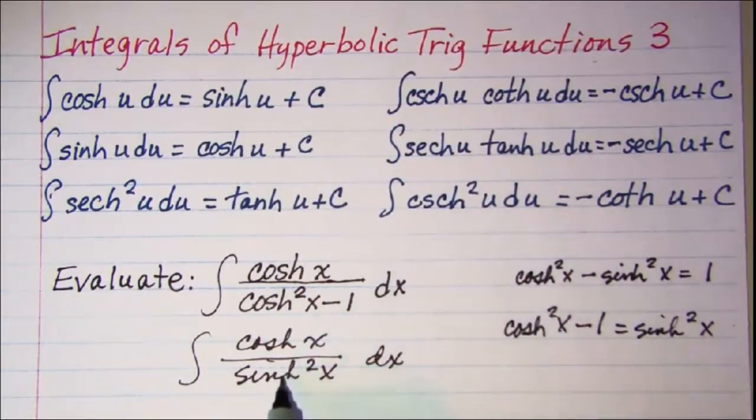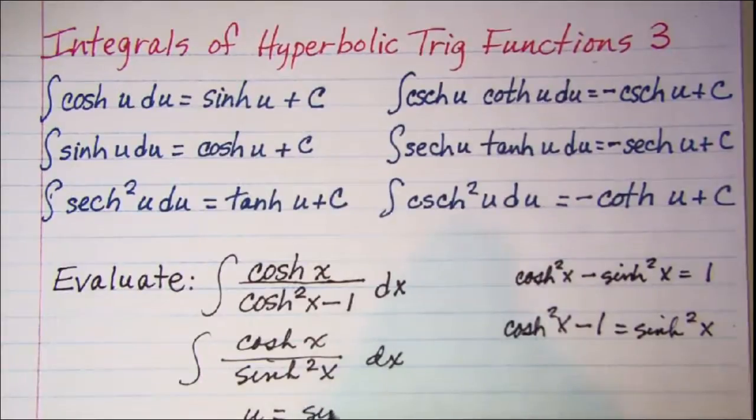Now I am going to let u be the hyperbolic sine of x. Then du is the hyperbolic cosine of x dx.